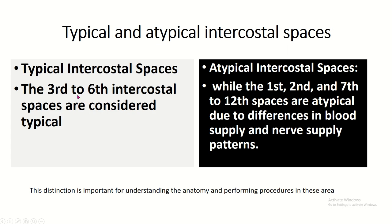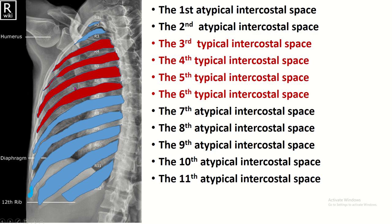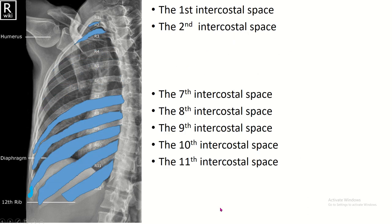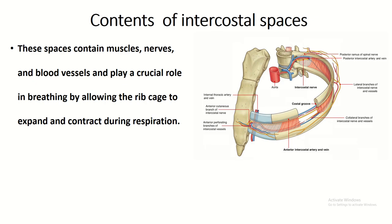Intercostal spaces number 3 to 6 are typical, and the rest of the intercostal spaces are atypical, due to differences in blood supply and nerve supply pattern. So these are the typical intercostal spaces, and the rest are atypical intercostal spaces.